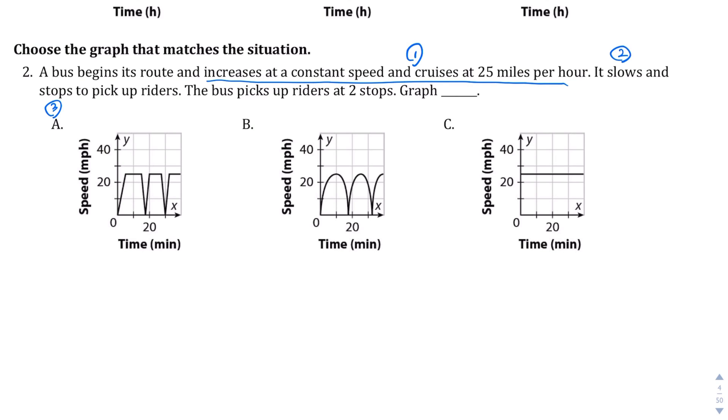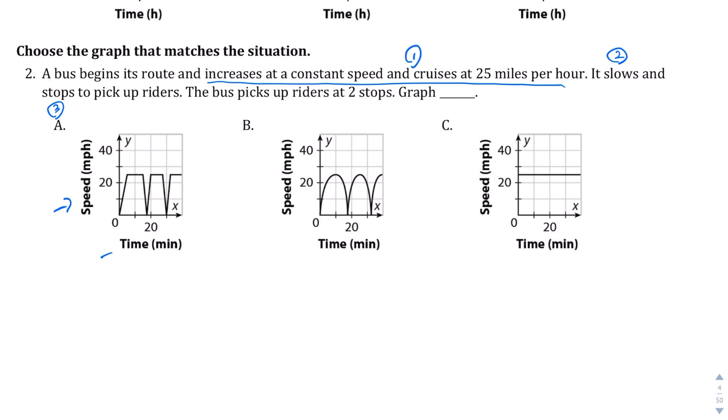So let's take a look at graph A. And again, they're comparing speed and time. So this kind of makes sense. They're increasing at a constant speed and then slowing down and then stopping to pick up riders. When you stop, your speed is not increasing. Hold on. No, no, no. Let me take that back. So you're cruising at 25 miles per hour. That makes sense given that this is at 25.